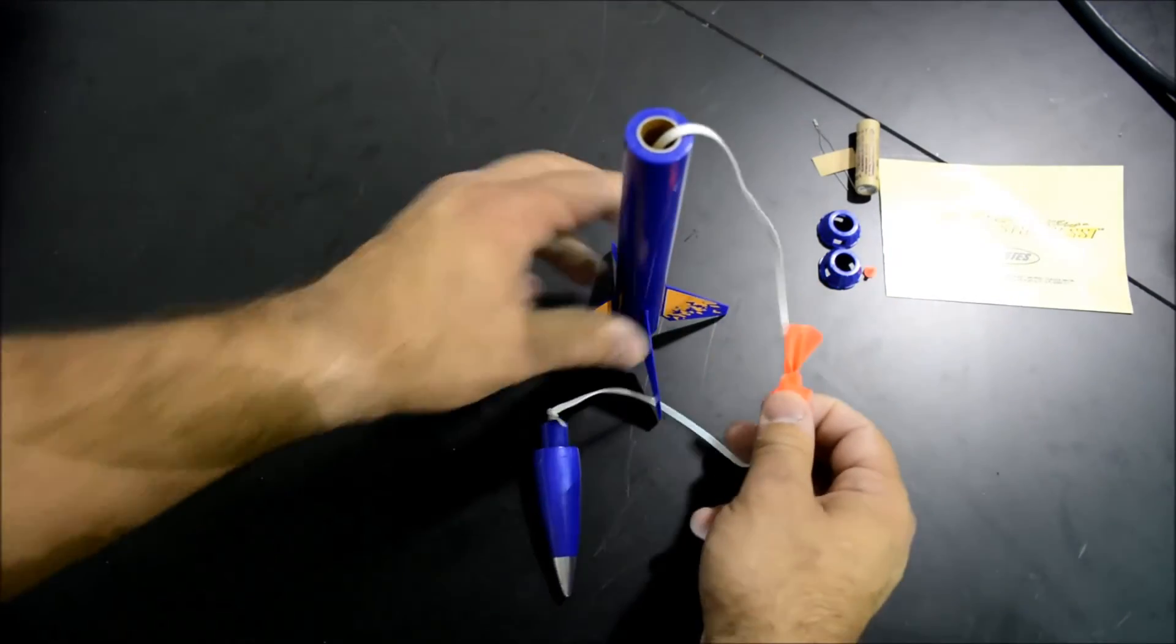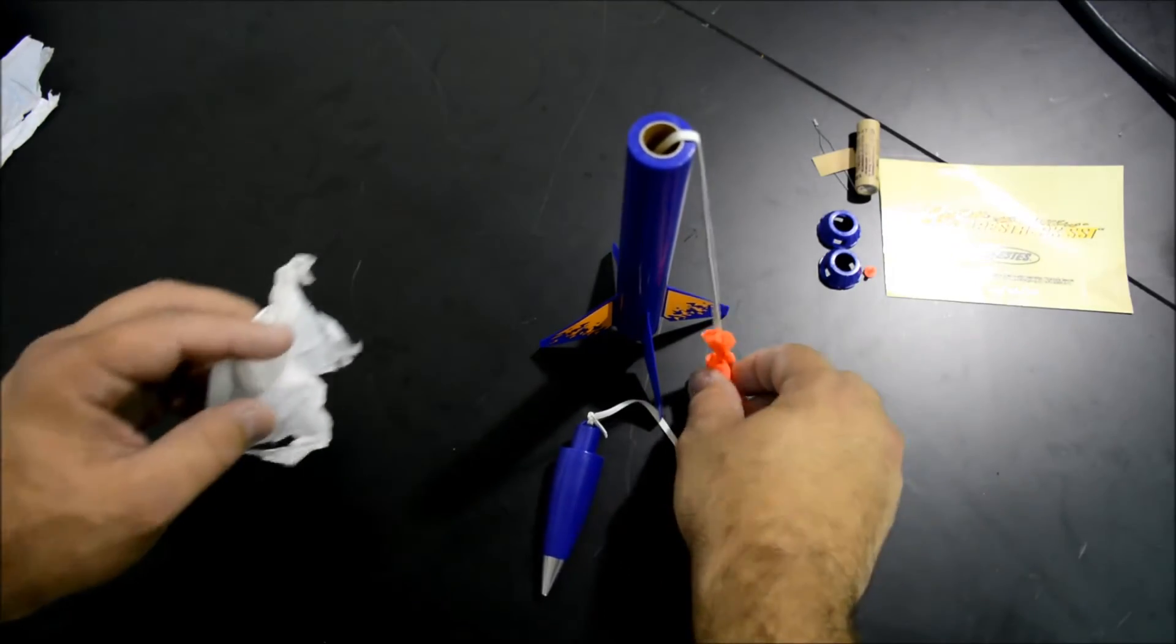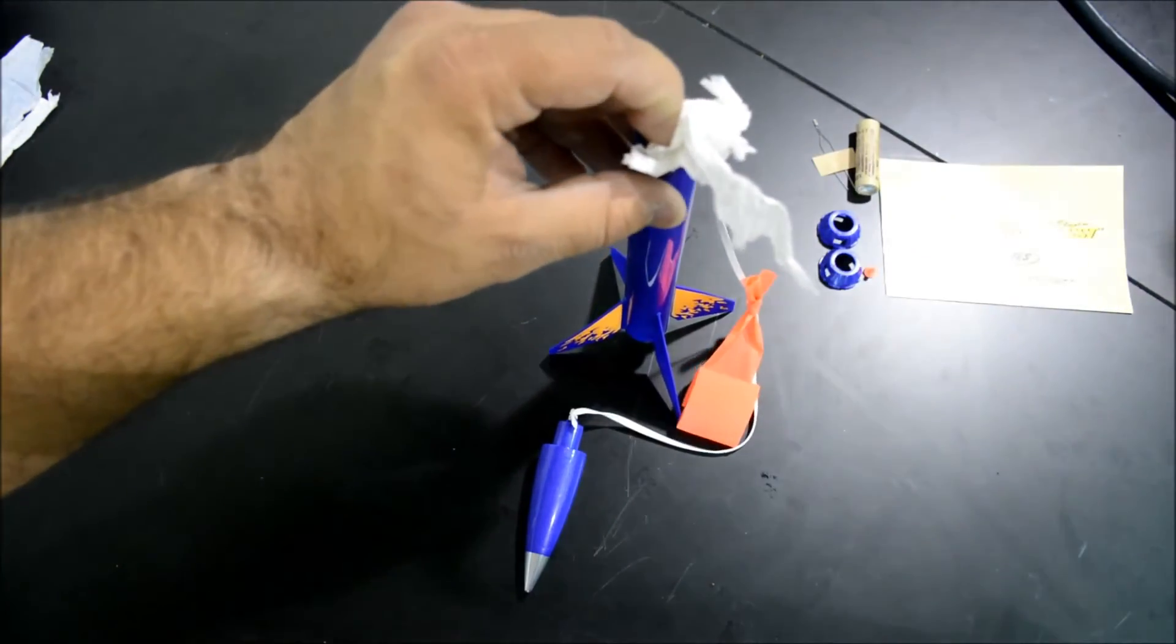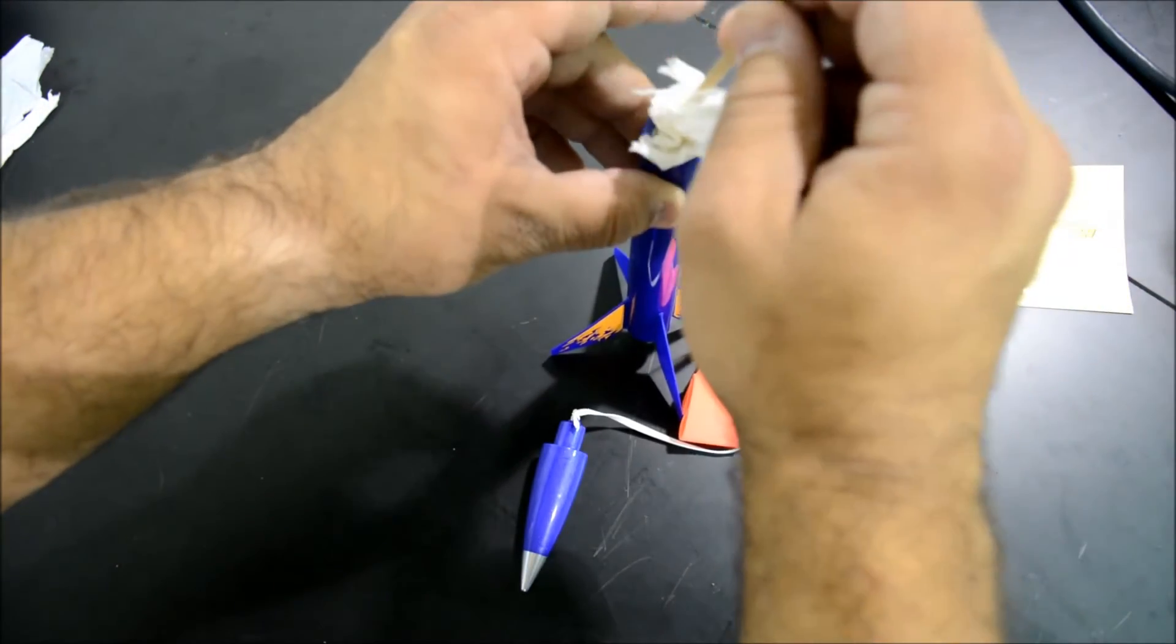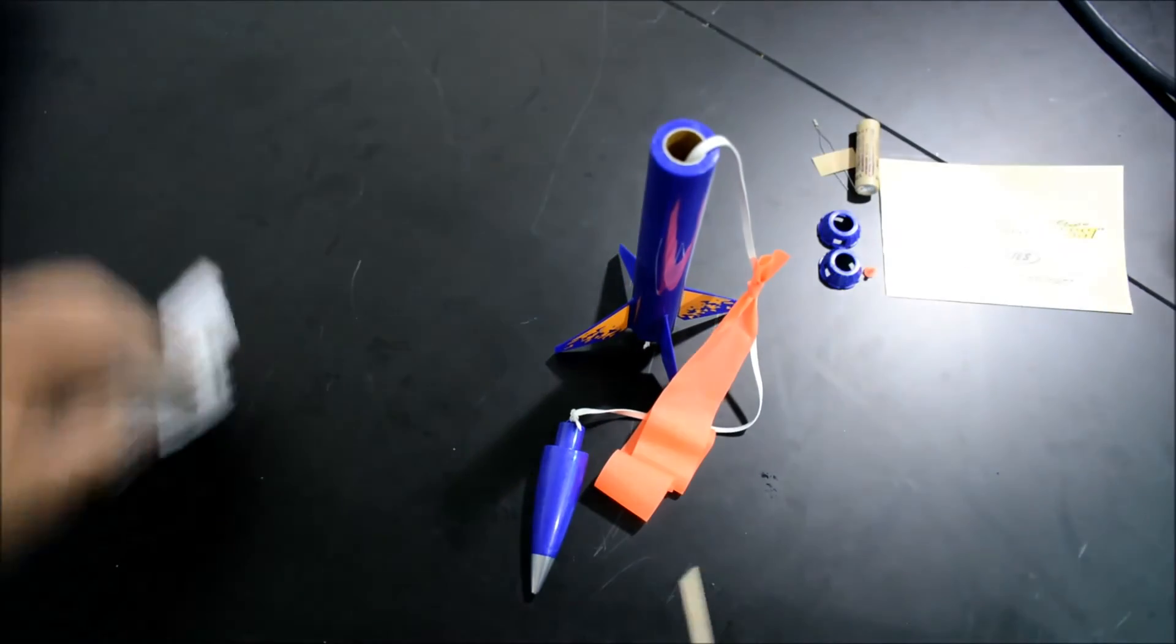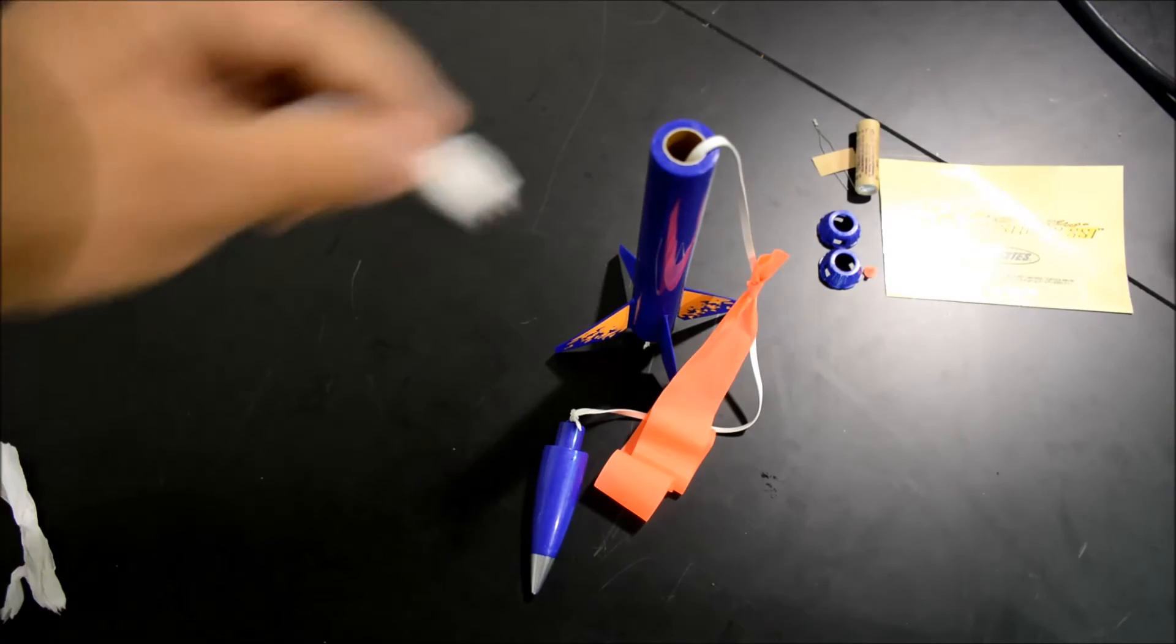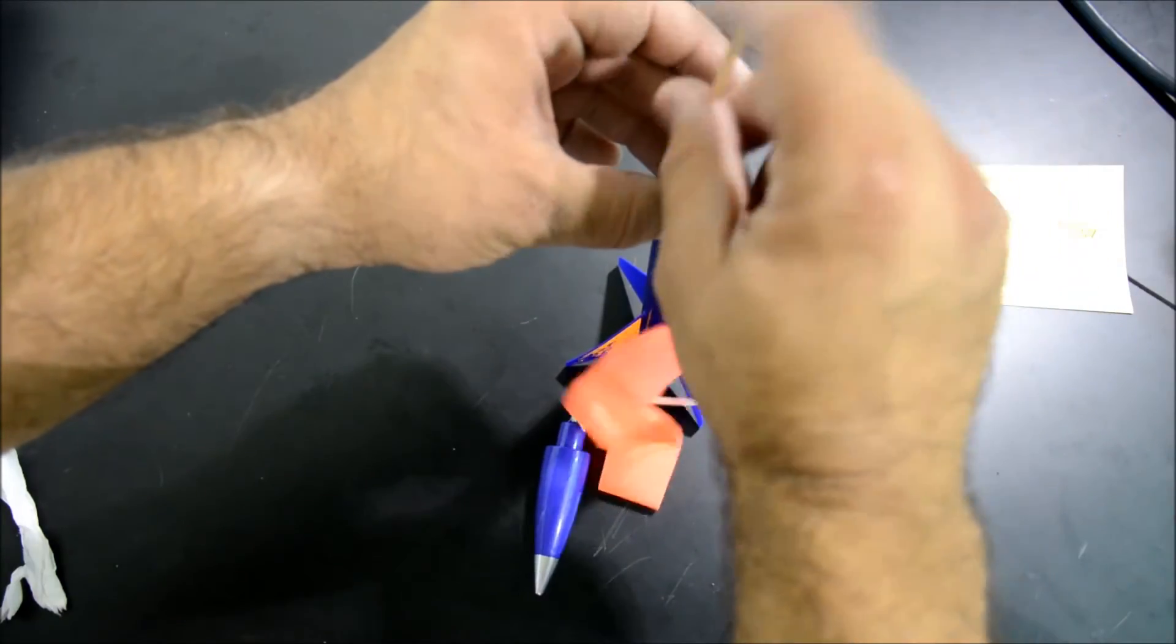Now we're about ready to load the motor. First, we need to add recovery wadding. This protects the streamer from the blast of the ejection charge when the motor is burnt out, and it's time to eject the streamer for descent.